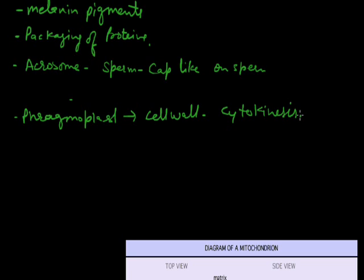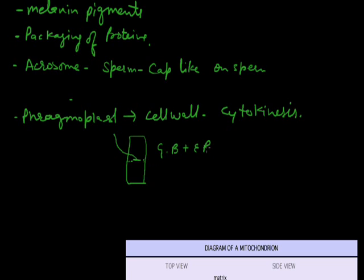During cell division, a cell plate is formed in the form of fragments or pieces — these are the phragmoplasts. They are made up of Golgi body and endoplasmic reticulum combined, which form the phragmoplasts responsible for the formation of the cell wall. This is the Golgi body — another important cell organelle in the cell.